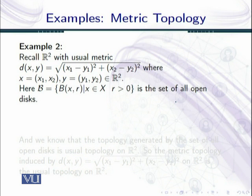Now recall the real plane ℝ² with the usual metric defined as d(x,y) = √[(x₁ - y₁)² + (x₂ - y₂)²] where x = (x₁, x₂) and y = (y₁, y₂) are points in ℝ². Here B is the set of all open disks in ℝ². The description of B(x,r) in ℝ² is basically the interior part of the disk whose center is x and radius is r.